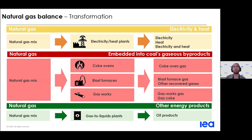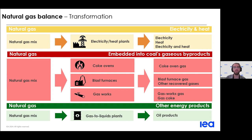The transformation sector covers many transformations that natural gas can undergo: at electricity or heat plants into electricity or heat; at various coal plants, coke ovens, and blast furnaces to create coal's gaseous byproducts; or at a gas-to-liquids plant to produce oil products. Natural gas is quite flexible and can be transformed into a number of other energy commodities.